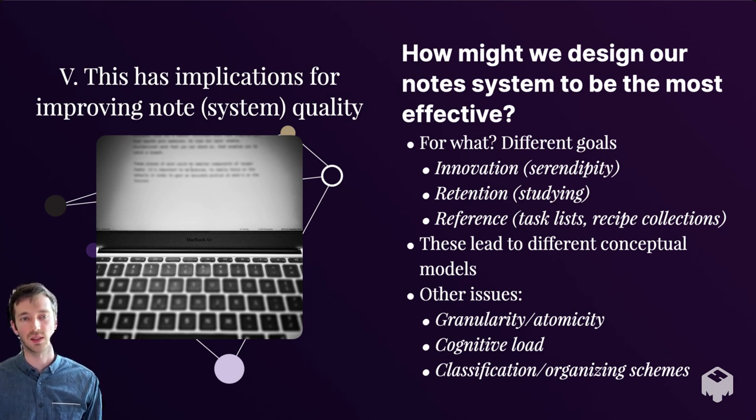The first question we have to ask is for what? Different goals might lead to different optimizations. Are we trying to take notes to have ideas? To study and retain material? To create reference lists like task lists or recipes? How we answer for what will change the conceptual model and the things we prioritize when capturing and using notes later. Then there are questions of granularity or atomicity of notes, how small each note is as an individual unit and how we build those things together in structures. Similarly, I have questions about how cognitive load works when we're interacting with our notes and how different approaches affect cognitive load and how we organize and classify notes.